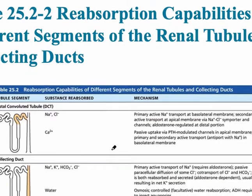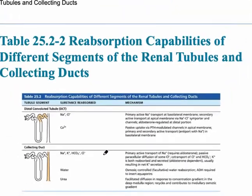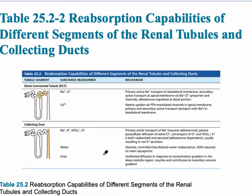In the distal convoluted tubule, there is also reabsorption of salt (NaCl) plus calcium, utilizing the hormone PTH that we saw a couple slides ago. The collecting duct is the final modification leading to urine, and this is where ADH primarily plays a role, along with aldosterone.